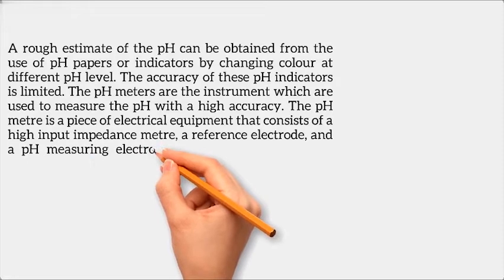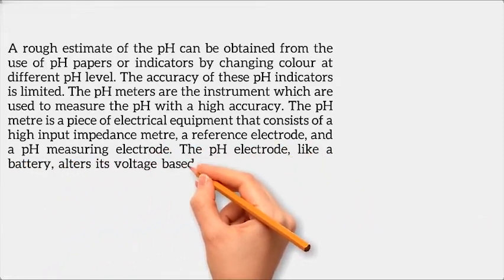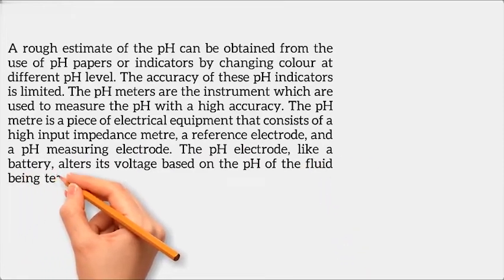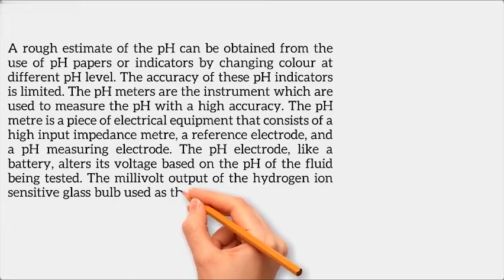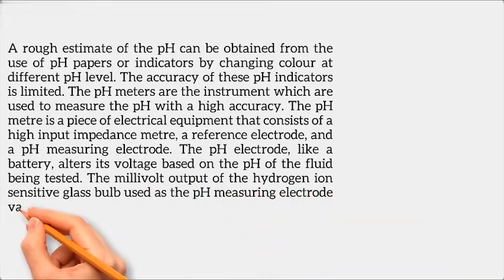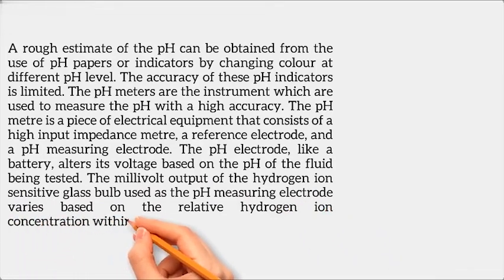The pH electrode, like a battery, alters its voltage based on the pH of the fluid being tested. The millivolt output of the hydrogen ion sensitive glass bulb used as the pH measuring electrode varies based on the relative hydrogen ion concentration within and outside the bulb.